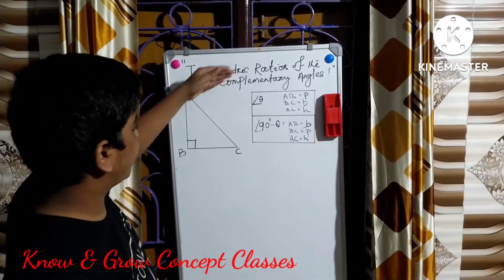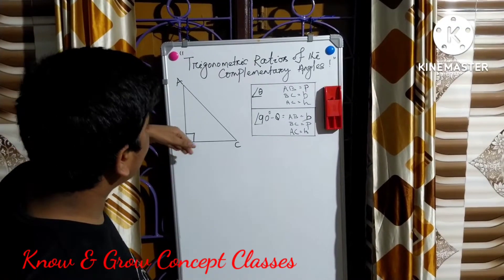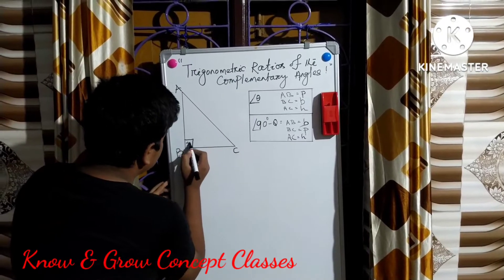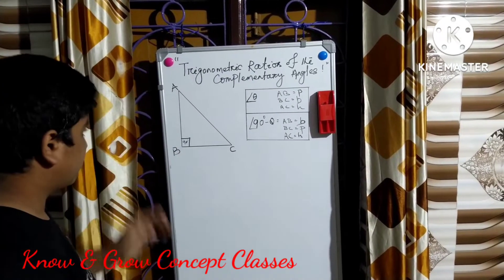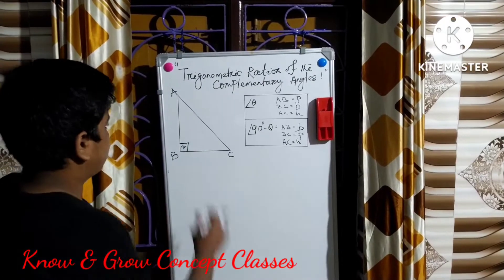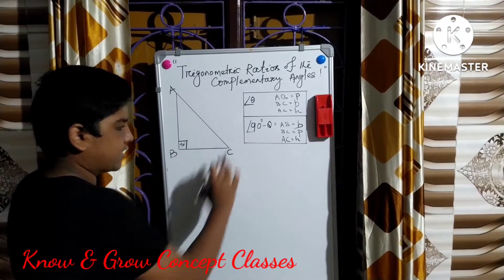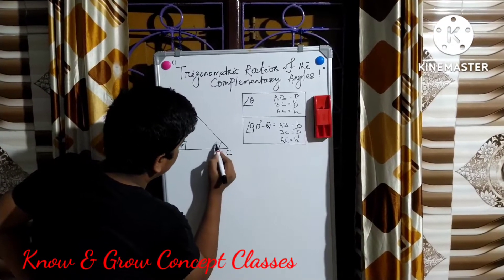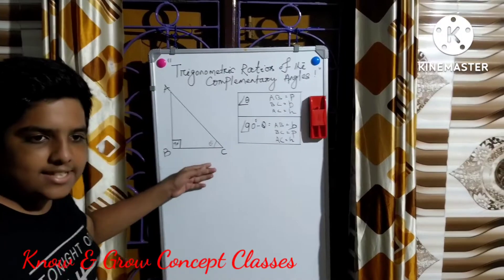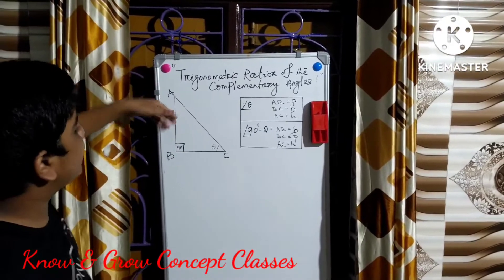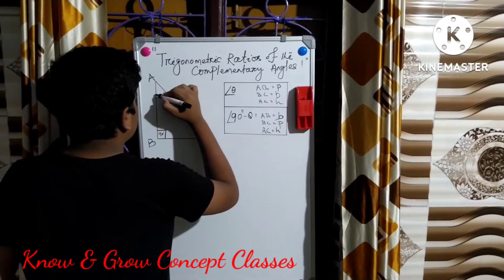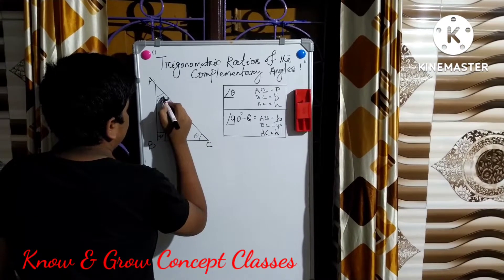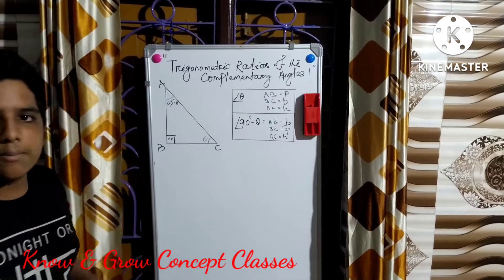To discuss this topic we have taken a right angle triangle which is right angled at B, meaning angle B is 90 degrees. As per the angle sum property, we can say that angle A plus angle C is equal to 90 degrees. Let us take angle C as theta, so angle A will be 90 minus theta.